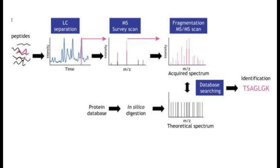If we want to extract more information, we can run the mass spectrometry machine again after analyzing the ion in the first channel. Running the mass spectrometry machine a second time on this ion allows us to see all the amino acid residue chains that compose this particular peptide.